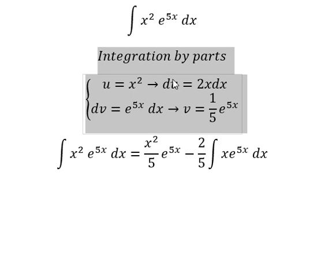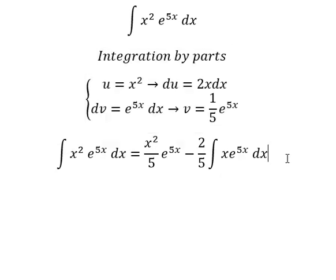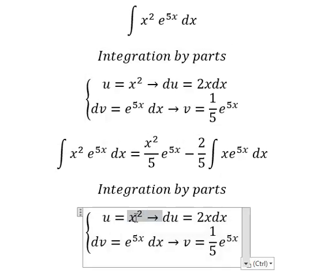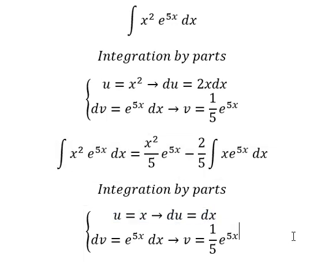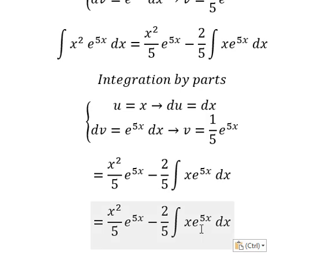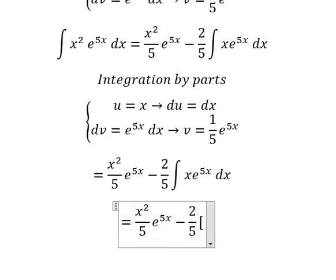Now this one, we have u equals x, so du equals dx, and dv equals e to the power of 5x dx, so v equals 1 over 5 e to the power of 5x.